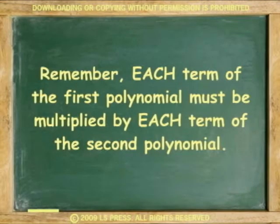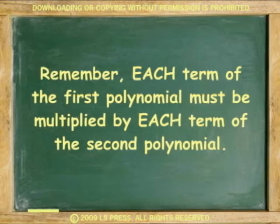First, we'll multiply a monomial by a binomial. Similar to the multiplication of integers, in the multiplication of polynomials, we use the distributive property. Each term of the polynomial is multiplied by the monomial.